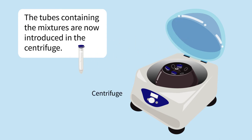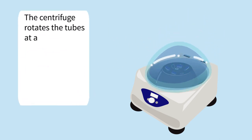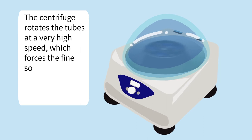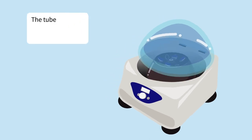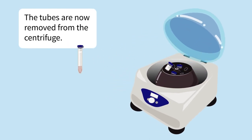The tubes containing the mixtures are introduced into the centrifuge. The centrifuge rotates the tubes at very high speed, which forces the fine solid particles to settle at the bottom of the tubes. The tubes are then removed from the centrifuge.